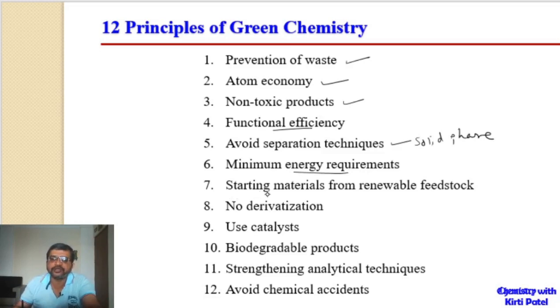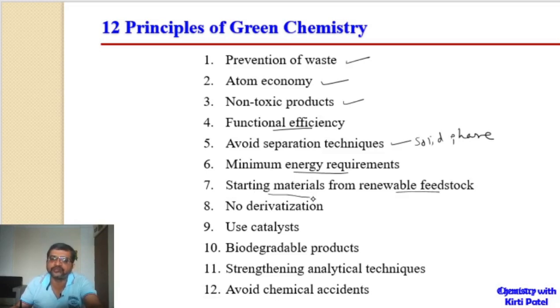The seventh principle talks about starting materials from renewable sources. For example, in the synthesis of adipic acid, glucose is used instead of benzene.